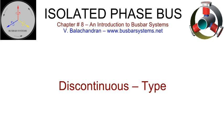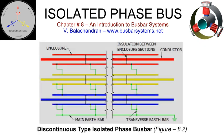Each section of the enclosure is earthed at one end. In this system, the current in one phase A induces a voltage on the enclosure of the adjacent phase B. The resulting eddy current produces a magnetic field that opposes the magnetic field generated by the current in conductor A. Consequently, the conductor in phase B experiences a diminished magnetic field due to the shielding by its enclosure.